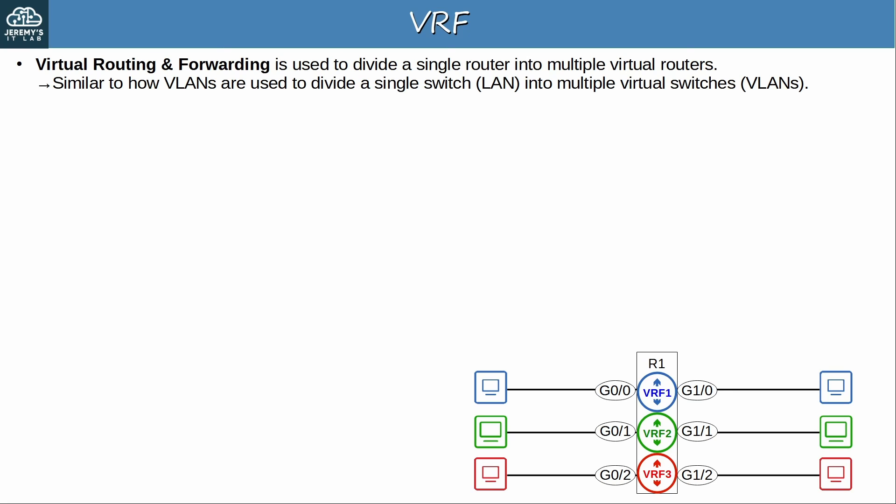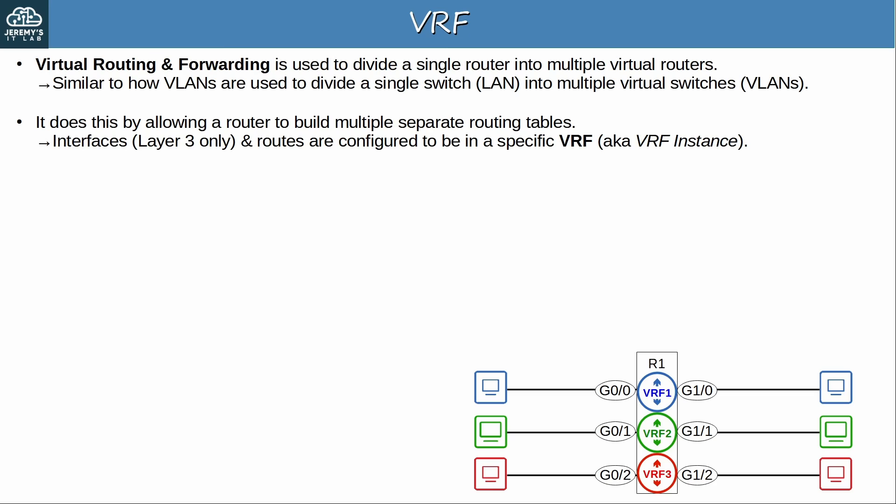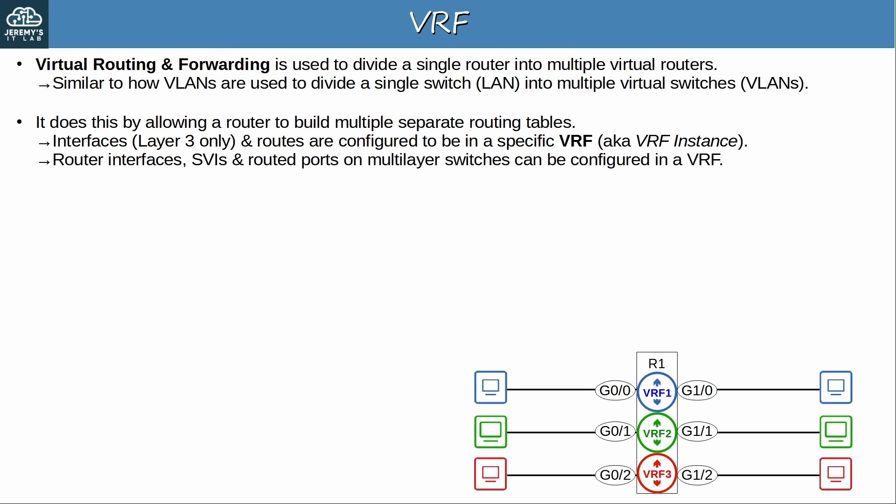How does VRF accomplish this? It does this by allowing a router to build separate routing tables. Normally a router has one routing table, but with VRF it has multiple. Interfaces — specifically layer 3 interfaces — are configured to be in a specific VRF, also known as a VRF instance. VRF does not apply to layer 2 interfaces on a switch. Only router interfaces, SVIs, and routed ports on multilayer switches can be configured in a VRF.